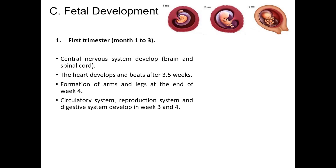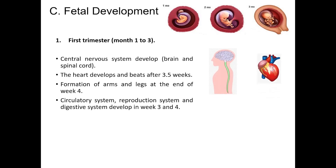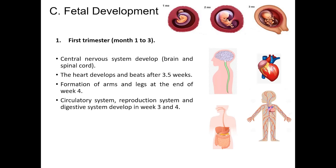During the first trimester, the central nervous system develops, consisting of the brain and spinal cord derived from the neural tube. The heart and other organs also start to form, and the heart begins to beat. Facial features continue to develop. Tiny buds that eventually grow into arms and legs form together with eyes, ears, fingers, and toes. The circulatory system, reproductive system, and digestive system begin to develop in weeks 3 and 4.